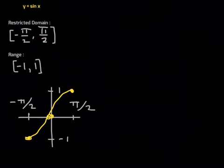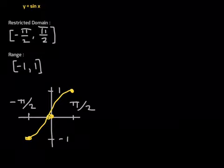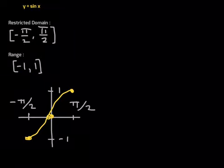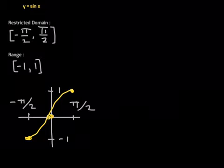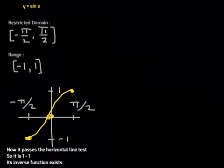Now look at this. This is what the graph would look like if we restrict the domain between negative pi over 2 to positive pi over 2. Please notice the restricted domain here — it's very important. The range is still the same, between negative 1 to 1. Now this function with the restricted domain is definitely one-to-one, so it will pass the horizontal line test and its inverse function exists.